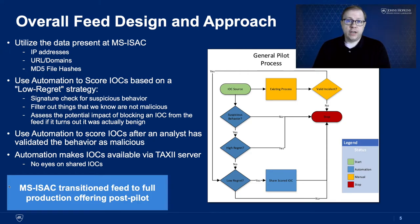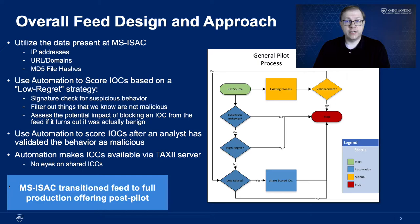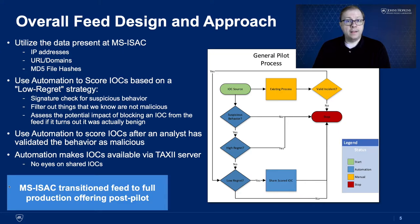We then go through a few checks to assess whether or not blocking that IOC is likely to disrupt operations. The idea is we can use automation to score that IOC, and then if an analyst does vet it as definitely malicious later, you can always update it. This is a way to get a faster stream of actionable intelligence throughout your whole community. We use automation to make that IOC available as a STIX object and share it through a TAXII server — we utilized STIX 2.1 — so you don't have to have a human interacting with this intelligence before it's shared. We had some good success with this in our pilot with the MS-ISAC.